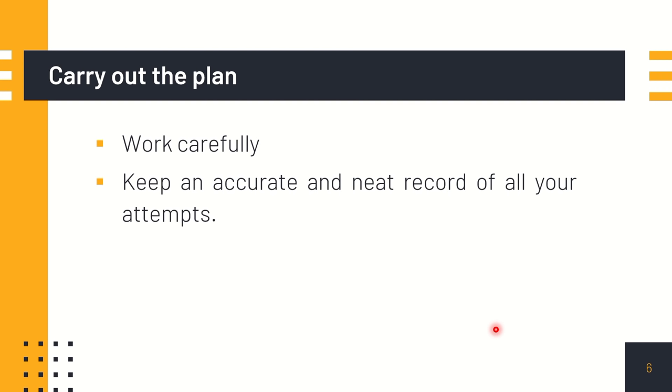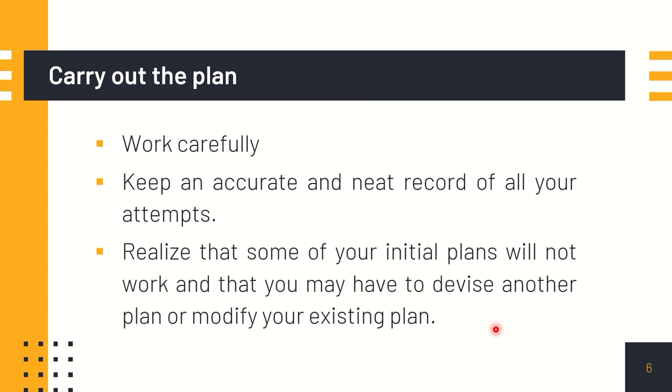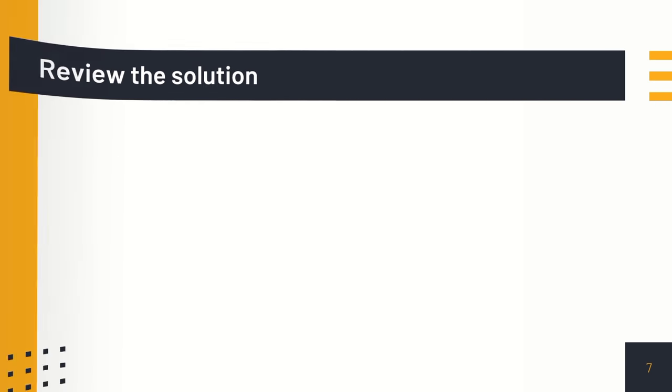If you have records and a list of possible solutions you've tried that didn't work, you can try another attempt. Realize that some of your initial plans will not work and that you may have to devise another plan or modify your existing plan. It's better to have many possible entries so that if one solution doesn't work, you can try another one.